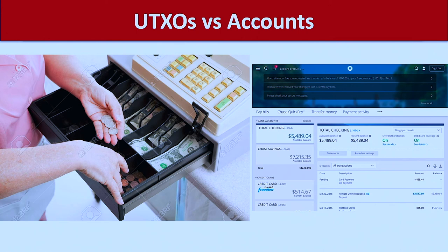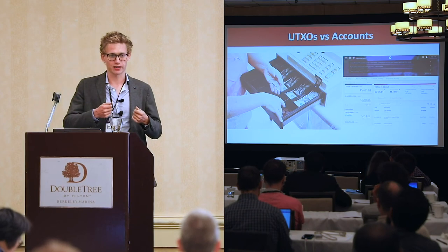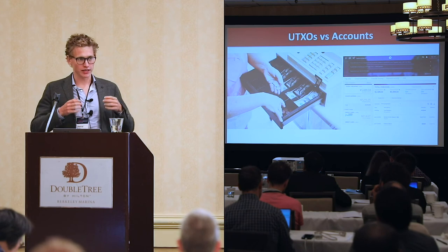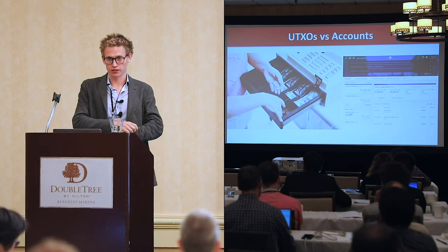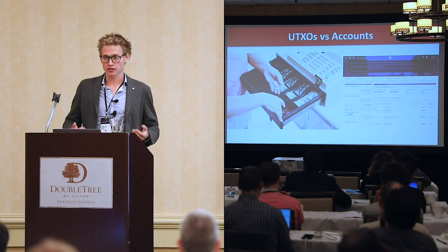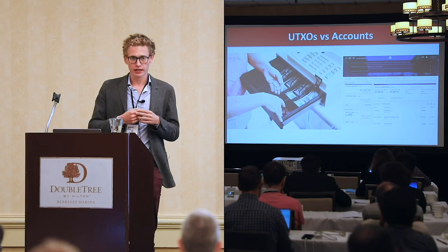It turns out that accounts are more suitable for smart contract-based systems, where the smart contract naturally has a large state representing the amount of data stored at that account. A smart contract has a fixed address and a fixed public key — it can't really create new addresses on the fly, unlike users in the Bitcoin system who can create new addresses and public keys all the time.